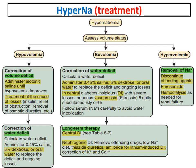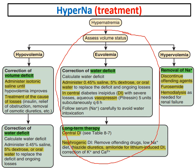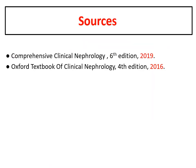Diabetes insipidus can present with hypovolemic hypernatremia, corrected by giving 5% dextrose or oral water. In central DI, give long-term desmopressin or vasopressin plus carbamazepine. In nephrogenic DI, correct or stop offending drugs — for lithium-induced cases, give thiazide diuretics and amiloride (amiloride prevents lithium from entering cells). If the patient has hypokalemia or hypercalcemia, these should also be corrected.